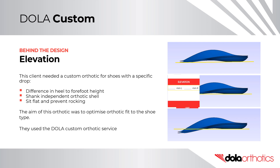This client needed a custom orthotic for shoes with a specific drop. There was a significant difference in the heel to forefoot height. They were using a shank independent orthotic shell material, like polypropylene. They wanted the orthotic shell to sit flat and prevent rocking. The aim of this orthotic was to optimise the orthotic fit to the shoe type.